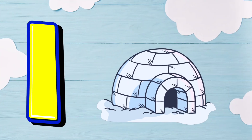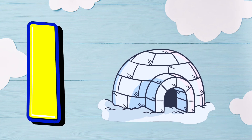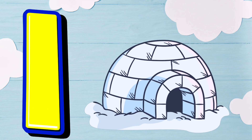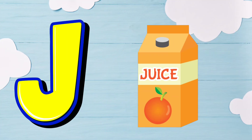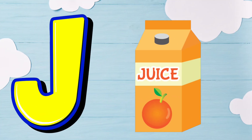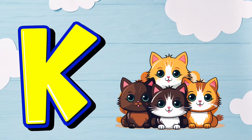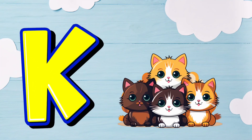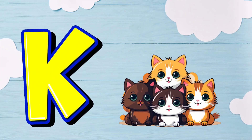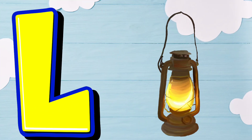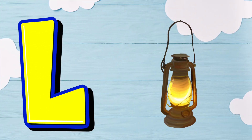I is for Igloo. I. Igloo. J is for Juice. J. Juice. K is for Kitten. K. Kitten. L is for Lamb. L. Lamb.